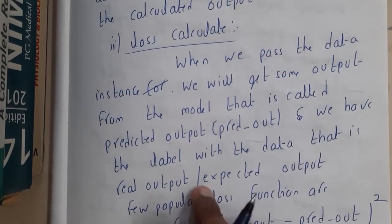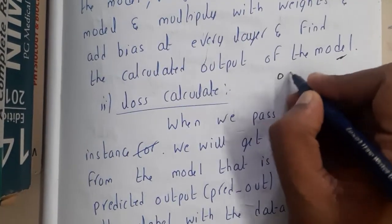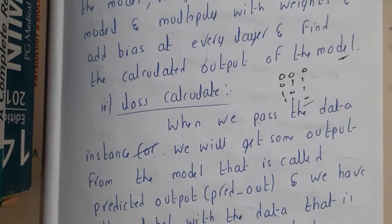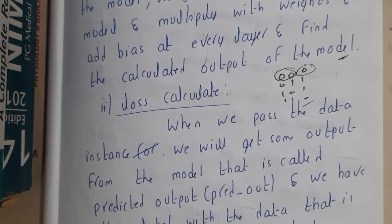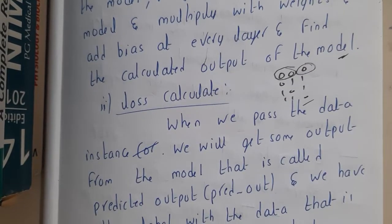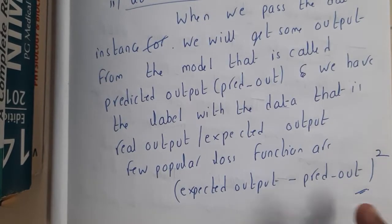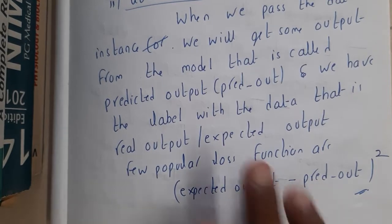the label with the data, that is the real output. So basically, we also know the real output. For XOR, the real output for inputs 0 0, 0 1, 1 0, 1 1 is 0, 1, 1, 0, right? In that way, we know the expected output. Whenever we are giving 0 0, we should get 0, else our values or weights are wrong. So we'll be changing those values. A simple loss function for that is: (expected output - predicted output)². This is a simple loss function.